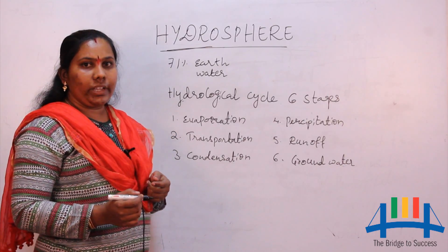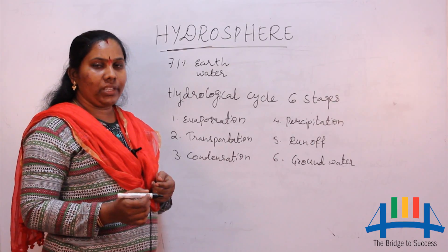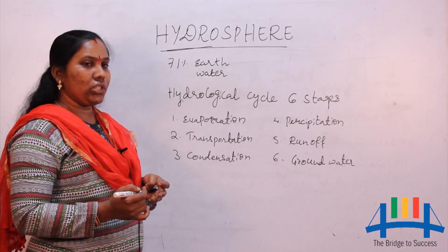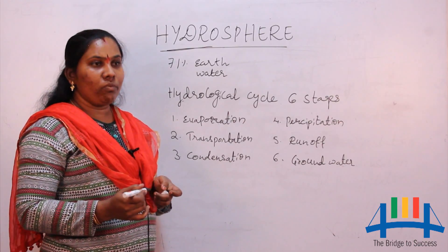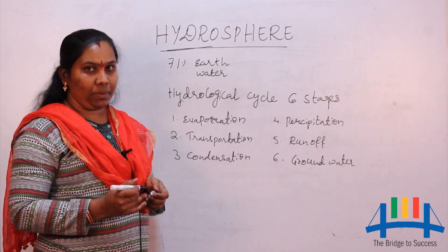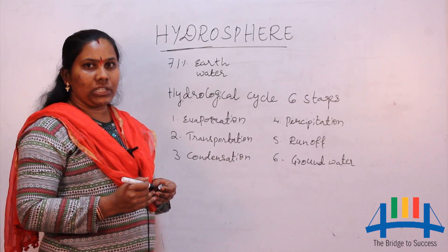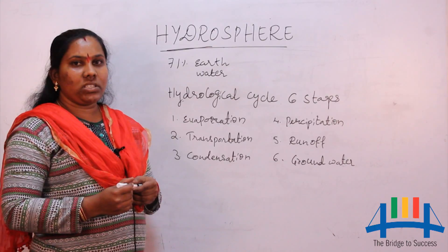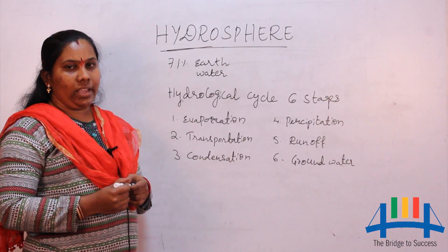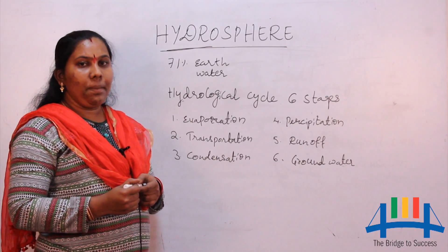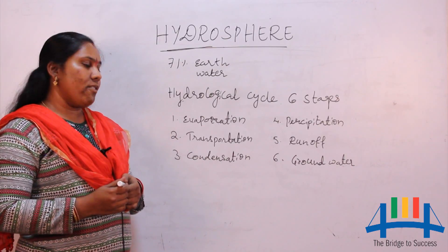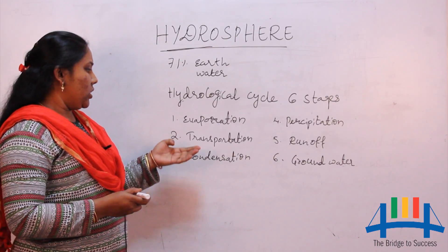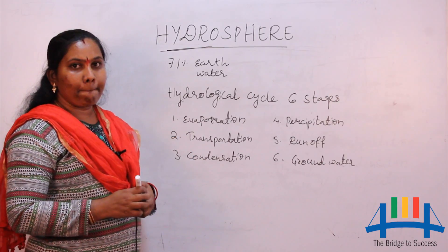Evaporation is the process where water moves from the Earth's surface to the atmosphere — that is, from liquid form it changes into gaseous form, which we call water vapor. Evaporation occurs from water surfaces like oceans, seas, rivers, and lakes, as well as from plants, which is called evapotranspiration.